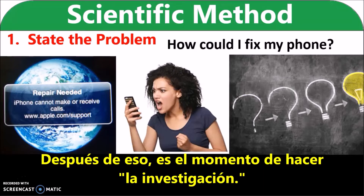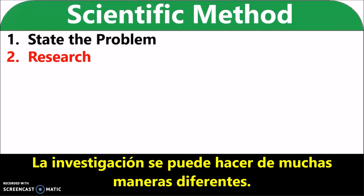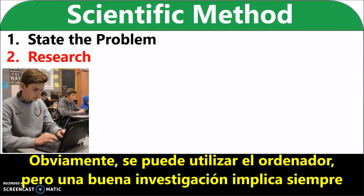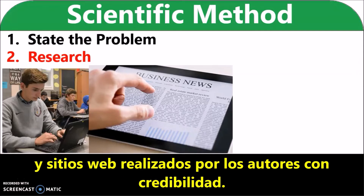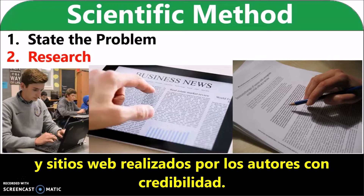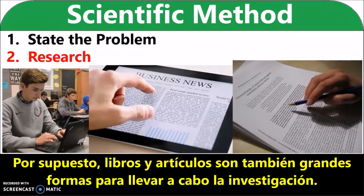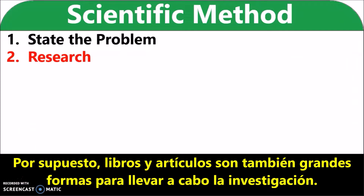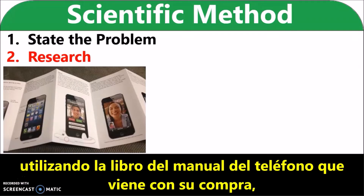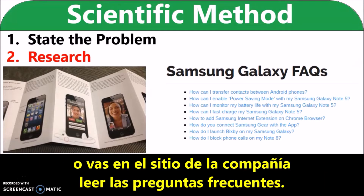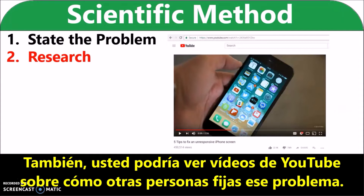After that, it's time to do research. Research can be done in many different ways. Obviously, you can use your computer, but good research always involves reading previous experiments, scientific literature, and websites made by authors with credibility. Books and articles are also great ways to conduct research. For example, you could do research on your phone using the phone manual book that came with your purchase, or go to the company website to read the FAQs, or watch YouTube videos on how other people fixed that problem.